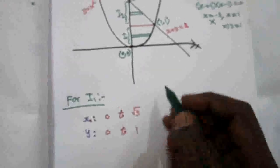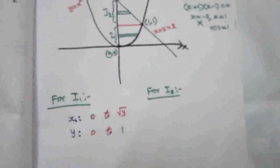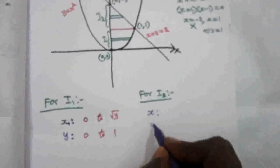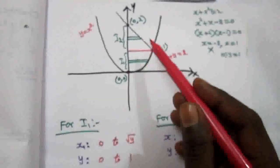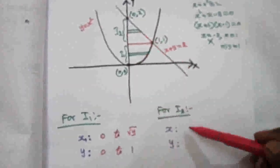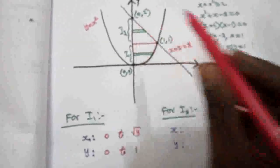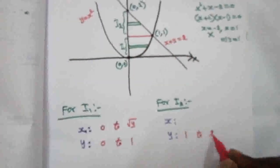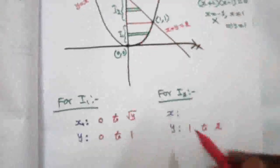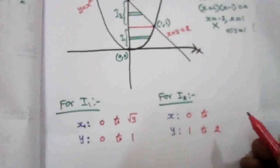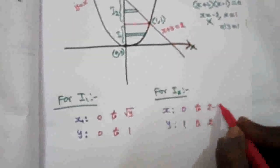For the I2 region, again x is variable and y is constant. In the I2 region, y is 1 to 2. The x limit: the strip starts from the axis at 0 and ends with the straight line. From the straight line, x equal to 2 minus y. So x limit is 0 to 2 minus y.